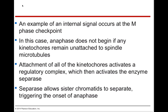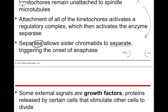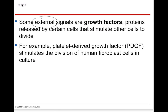An example of an internal signal at the M phase checkpoint: anaphase does not begin if kinetochores aren't attached. The kinetochores are on the outside of our centromeres — if you don't have a kinetochore microtubule correctly attached, you won't proceed. Attachment of all kinetochores activates a regulatory complex, which then activates the enzyme separase. Separase allows the sister chromatids to actually separate, which triggers anaphase — where the chromosomes are pulled to opposite ends of the cell.